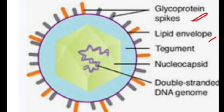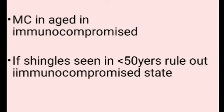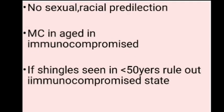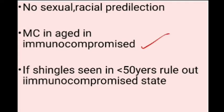The herpes zoster virus has a double-stranded DNA genome with glycoprotein spikes and a lipid envelope. There is no sexual or racial predilection for zoster infection. It is more common in immunocompromised persons, so if shingles or herpes zoster occurs in patients under 50 years of age, you should rule out an immunocompromised state.